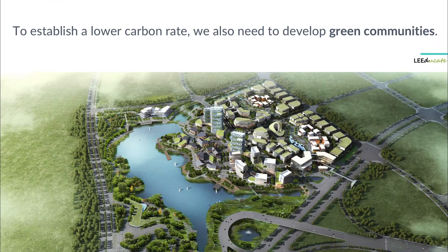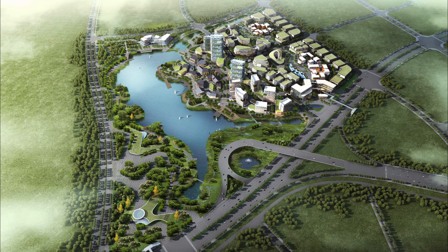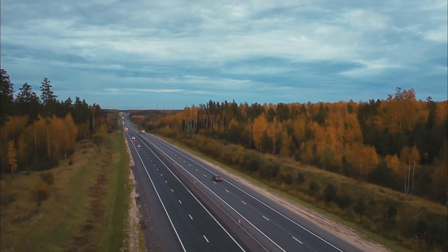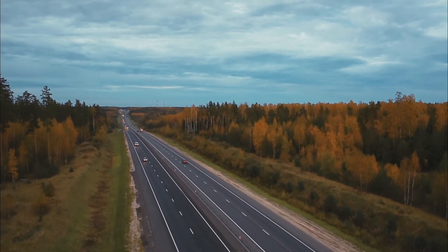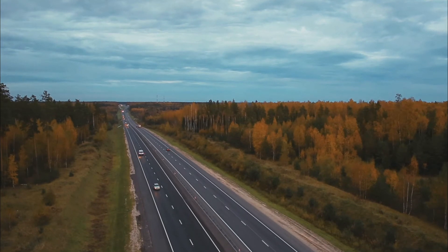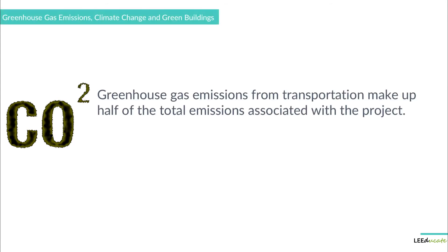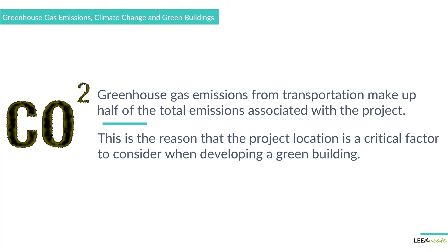The first thing that a green community should implement is the reduction of the distances that vehicles travel. The buildings in the suburban areas, even if they are green buildings, create greenhouse gas emissions due to the long distances that people drive every day. Additionally, emissions from transportation make up half of the total emissions associated with the project. This also means that the project location is another critical factor to consider when developing a green building.